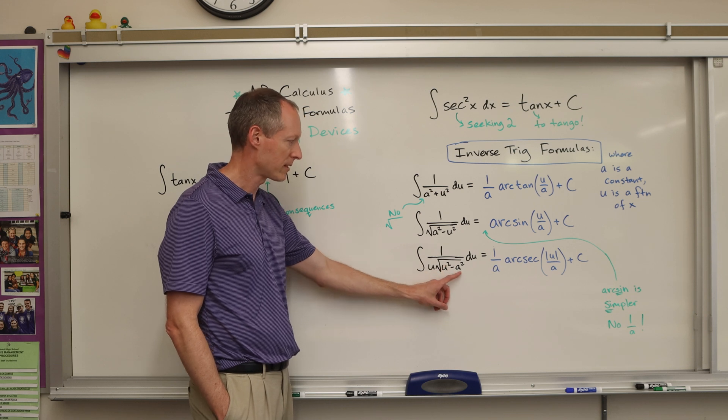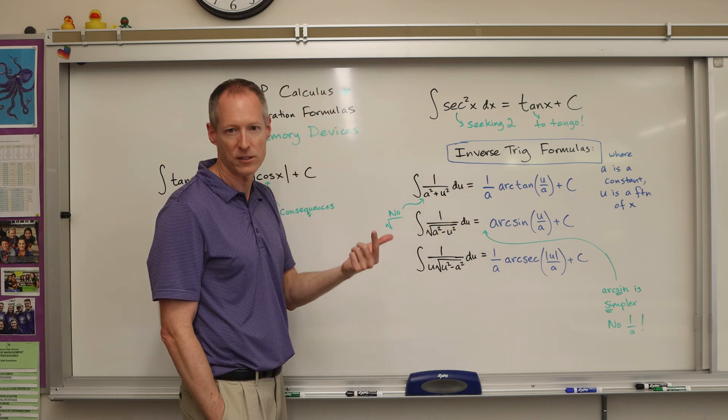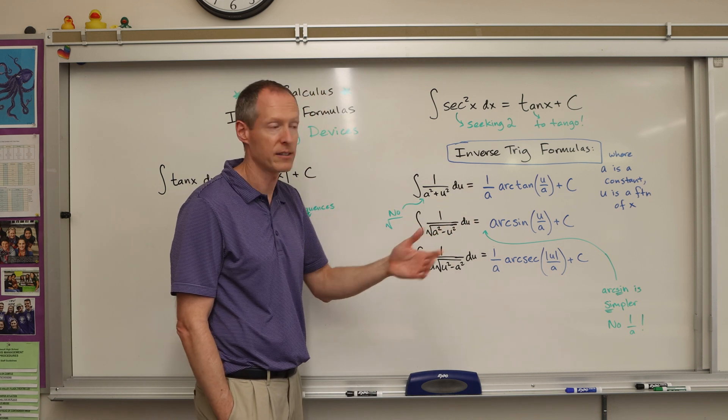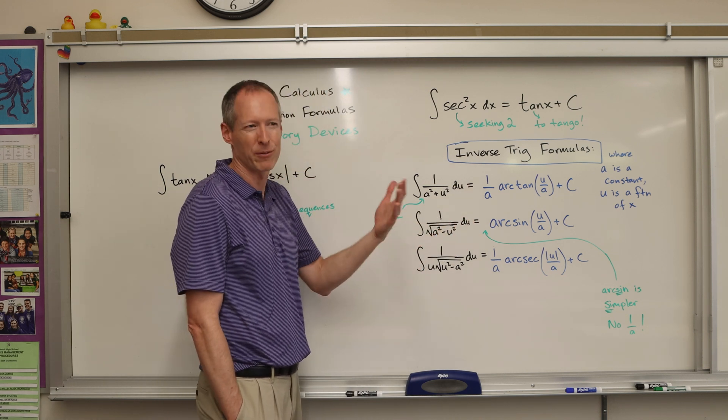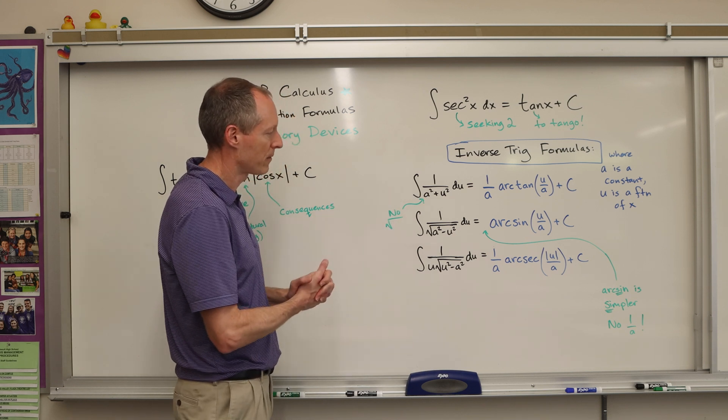And then arc secant has a u out front, but also now the u squared is first, u squared minus a squared. By the way, a is a constant, so a is a number, and u is going to be a function of x. U could equal x, you could equal x squared, you could equal 5x, but something in terms of x.